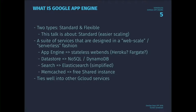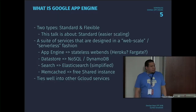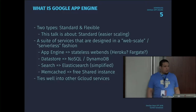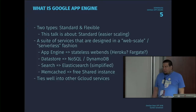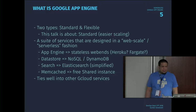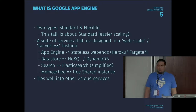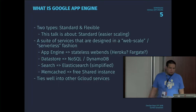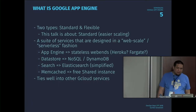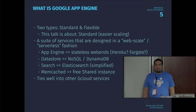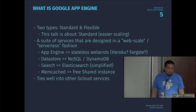So what is Google App Engine? There are two types: standard and flexible. I'm only going to talk about the standard version. It's a suite of services. Lambda, for example, is basically running functions, but Google App Engine contains a bit more. You have the App Engine itself, which is somewhere like Heroku or Fargate. You have a datastore, which is similar to DynamoDB. You have full-text search, which is like a simplified version of Elasticsearch. And you get free shared memcache instances, though you can also buy dedicated ones. The whole suite ties really well into the other gcloud services, like storage.